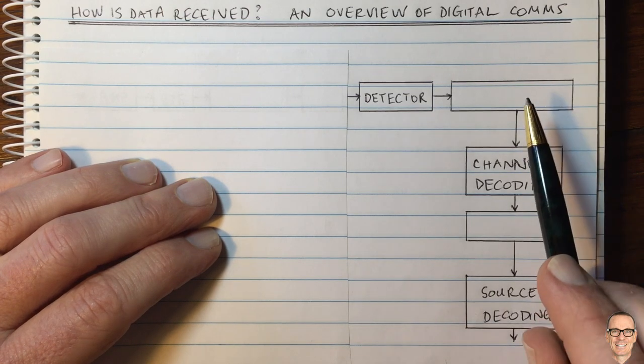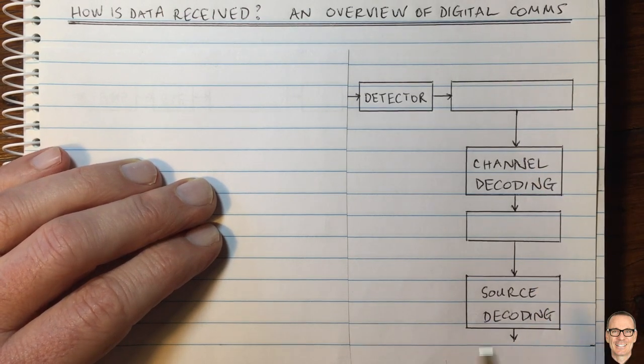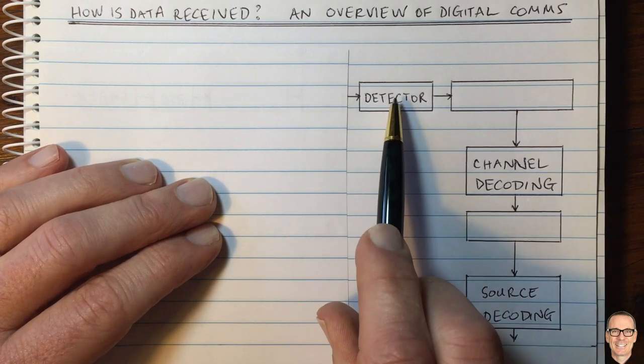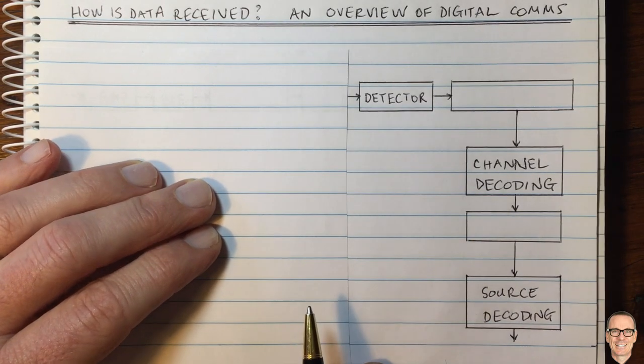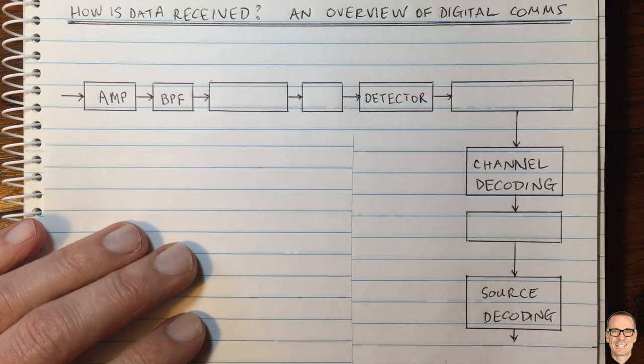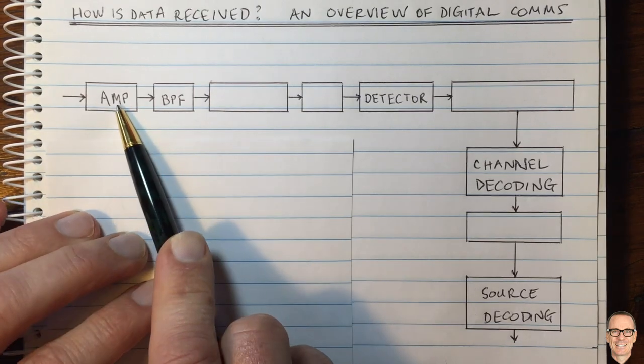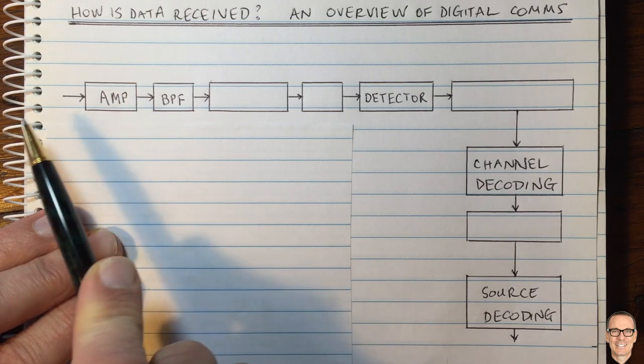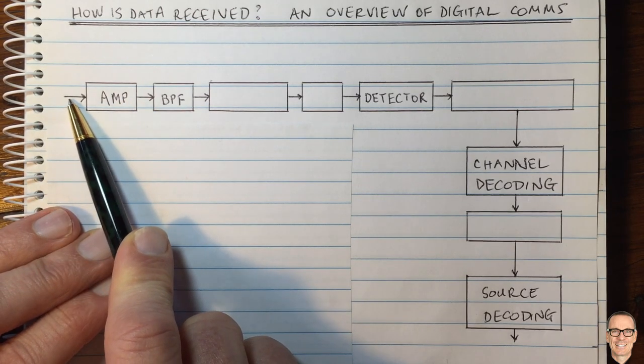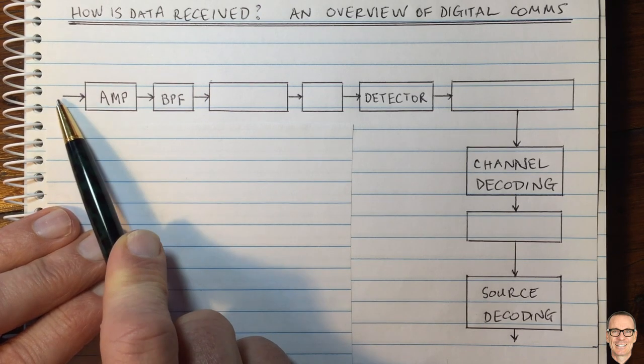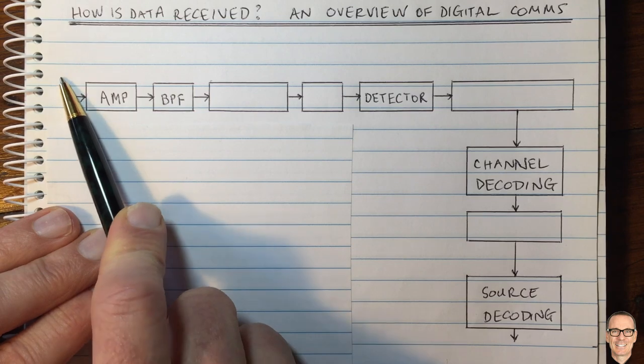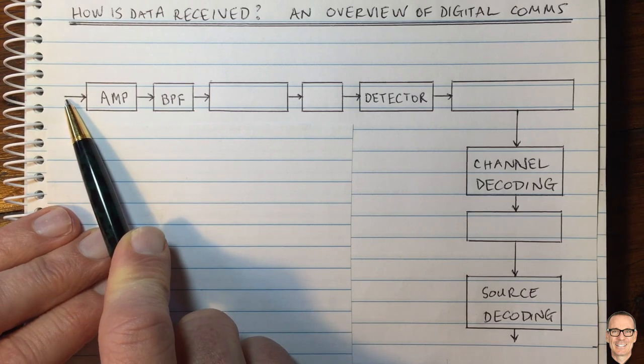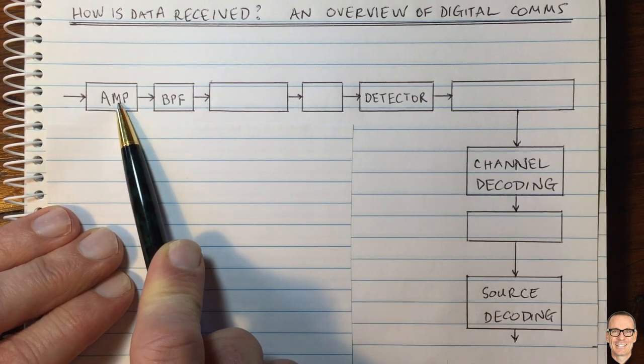But what about the other boxes here that I haven't filled in? There are other things we have to do even before the detector. The first thing you need to do is amplify your signal because it will have been transmitted from some distance away. If it's come over a copper wire, it will have been attenuated. If it's come through the air, it will have radiated in many directions and your antenna will only have picked it up in the direction you're receiving it in.